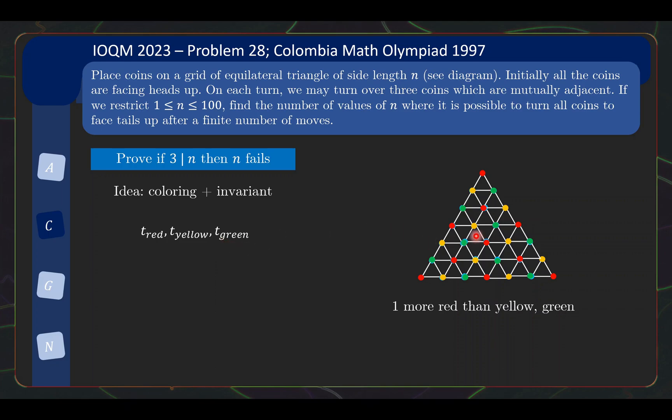So each time we hit a small triangle, a red coin will flip from head to tail or tail to head, which means T_red will change by plus one or minus one. Similarly, because there's a yellow corner, T_yellow will change by plus one or minus one, T_green will change by plus one or minus one. So each time we hit a triangle, the parity of the T value will flip from zero to one or one to zero. And because they all start off as zero with the same parity, this means that the parity of these three values always remain the same no matter how many small triangles we hit.